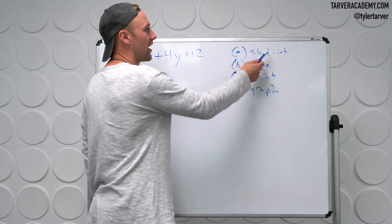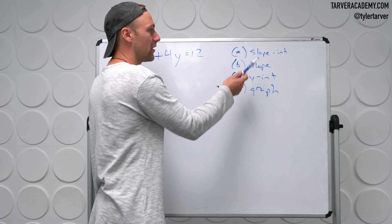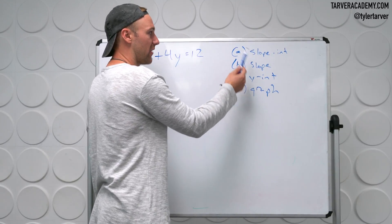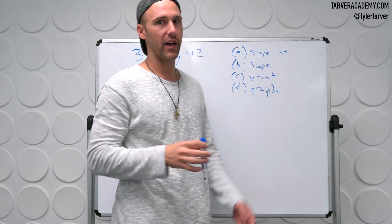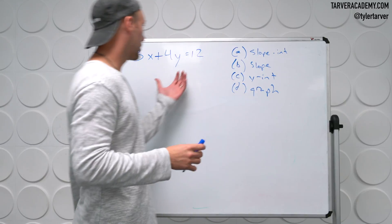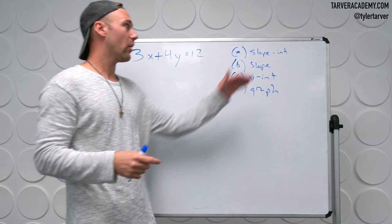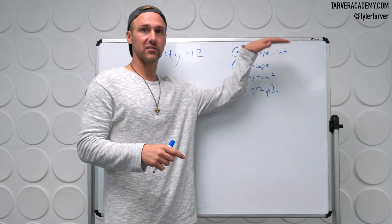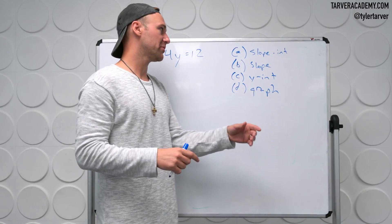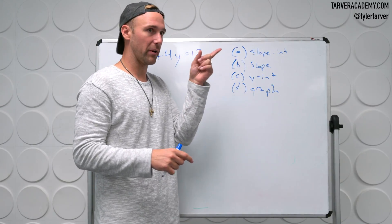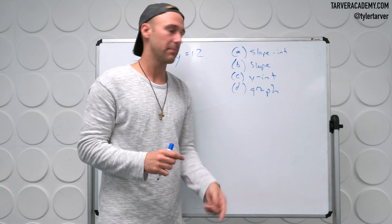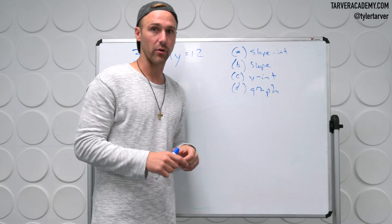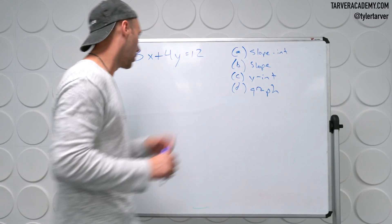So we want to find the slope-intercept form. We want to find the slope, the y-intercept, and graph it. Once we find that slope-intercept form, we'll just be able to look at it and say, that's the slope, that's the y-intercept, and then we can graph it.